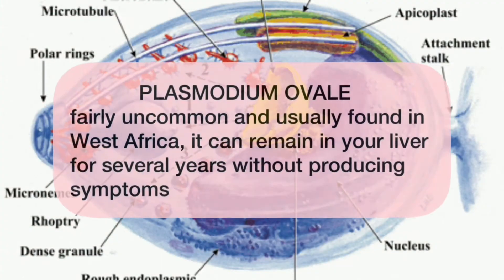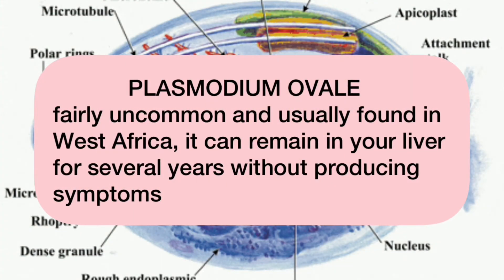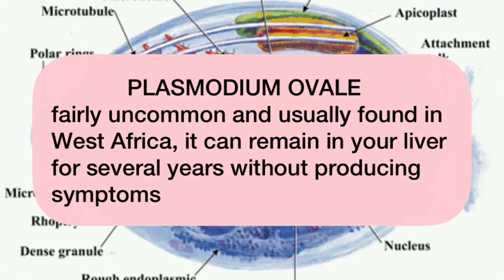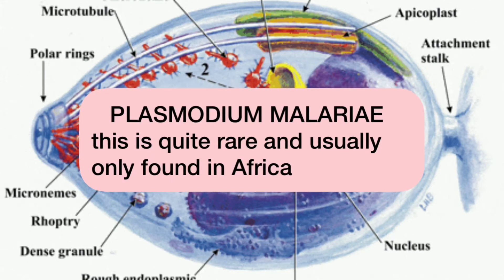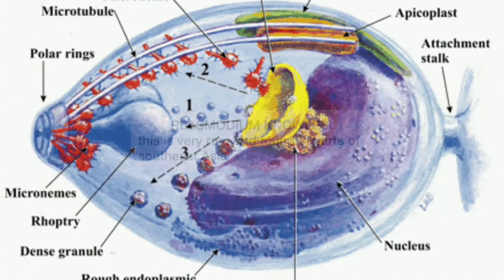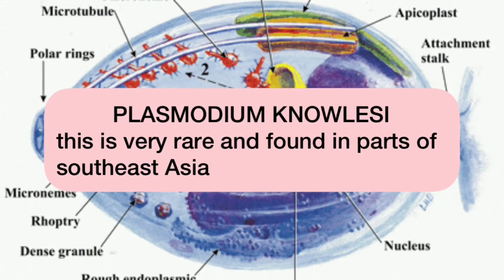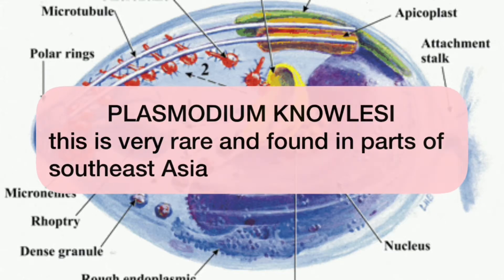Thirdly, we have Plasmodium ovale, which is fairly uncommon and usually found in West Africa. It can remain in your liver for several years without producing symptoms. We also have Plasmodium malariae, which is quite rare and usually found only in Africa. Lastly, we have Plasmodium knowlesi, which is very rare and found in parts of South East Asia.